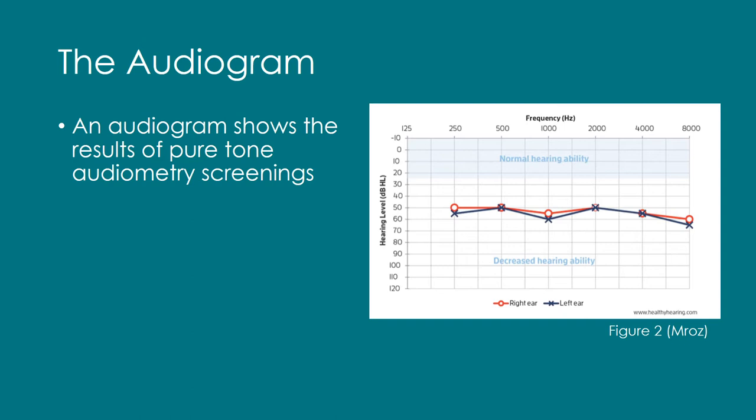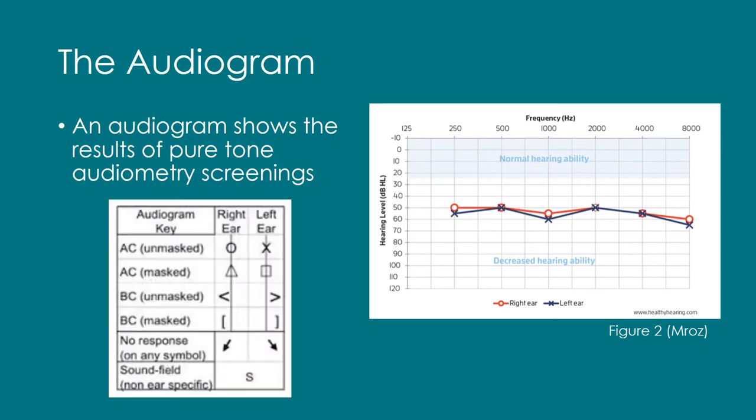But what do all these symbols mean? If we look at this audiogram key, we can see the breakdown of all these symbols. The right ear is always represented by red and the left ear by blue. A circle represents unmasked air conduction testing in the right ear, and an X represents unmasked air conduction testing in the left ear, and so on.